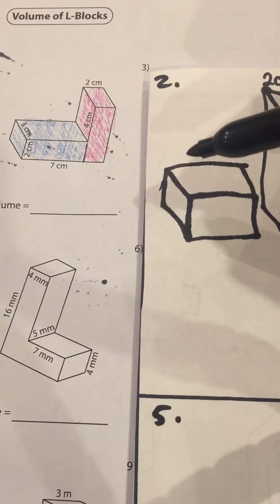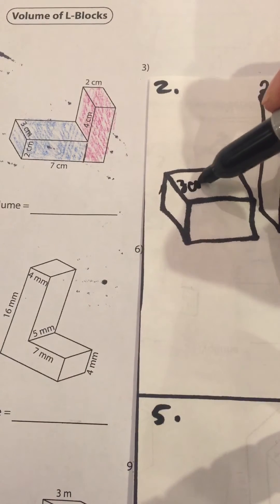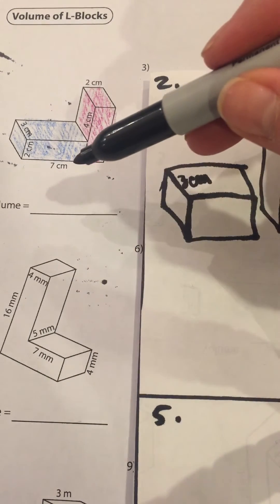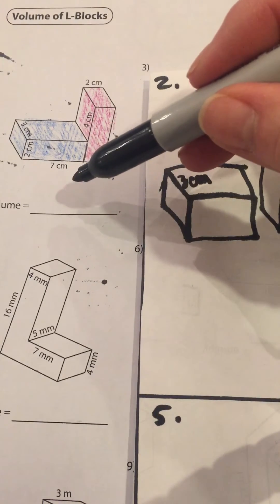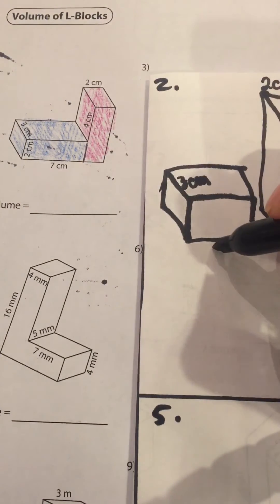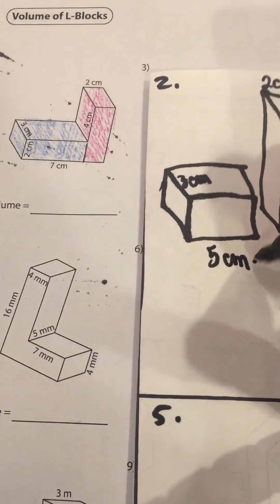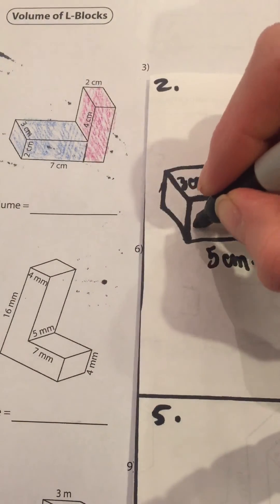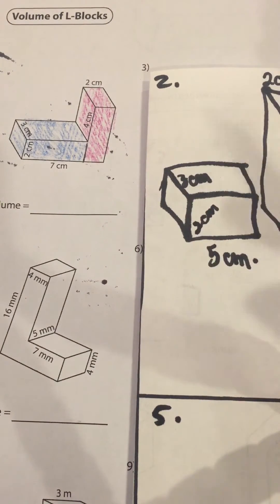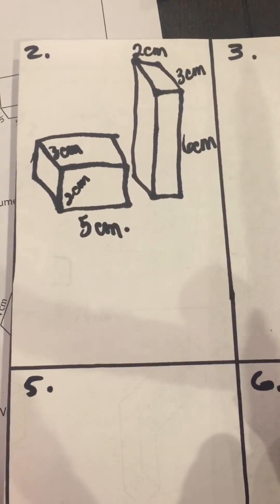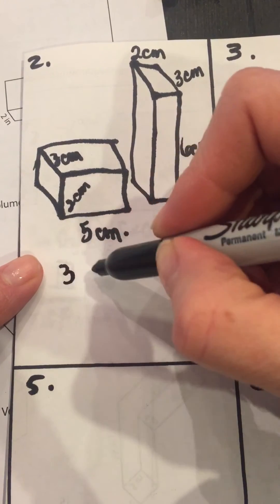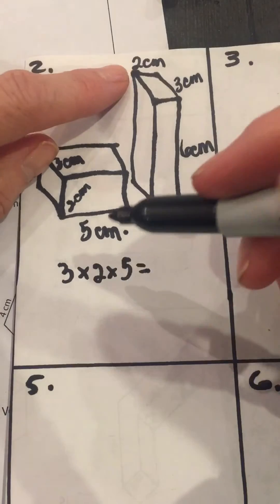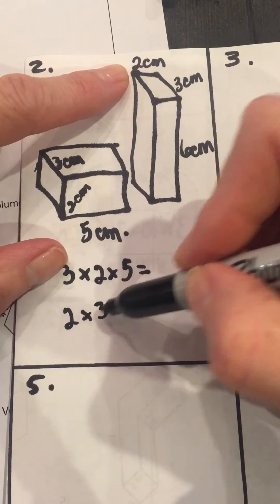Now let's go back and label the blue piece. We know it's three centimeters, and we know that the entire length of both of these pieces is seven. But we cut it right here, so seven take away the two centimeters width means this new piece is going to be five centimeters long. We can also see that it's two centimeters high. Now we have the dimensions of both shapes — the blue and the purple. The blue piece is three by two by five, and the purple piece is two by three by six.